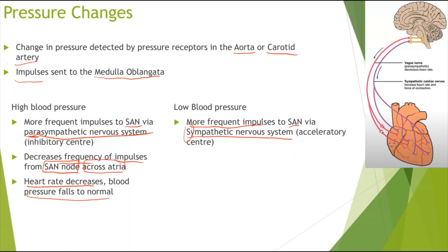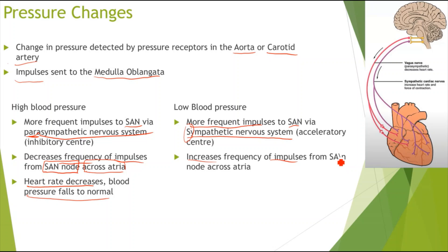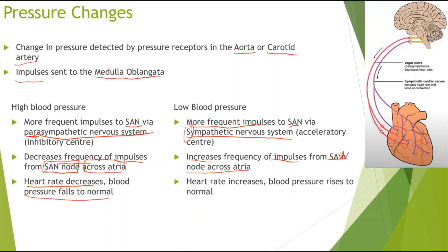This is done via the sympathetic nervous system, which increases the frequency of impulses from the SAN across the atria. This causes more contractions in the atria and more impulses being sent to the AVN, which in turn increases the heart rate, so blood pressure would rise back to normal.